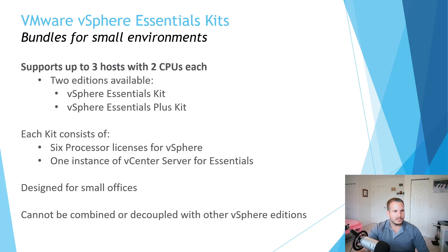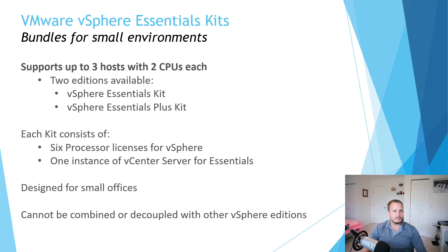Going to the Essentials Kits — we have an Essentials Kit for both Essentials and Essentials Plus. They support up to three hosts, and each host can have two physical CPUs each. Each kit consists of six processor licenses for vSphere and one instance of vCenter Server for Essentials. So doing the math: three hosts, two CPUs each — that's six processor licenses to support vSphere — and you get that instance of vCenter Server for Essentials to manage those three hosts.